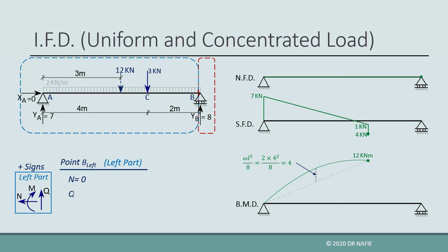The shear force will be the sum of three forces: yA at positive 7 kilonewtons, the negative 12 kilonewton equivalent force, and the negative 3 kilonewton concentrated force, giving a value of negative 8 kilonewtons for the shear. This value is drawn on the diagram at point B and connected to the value calculated at the previous step with a straight line.